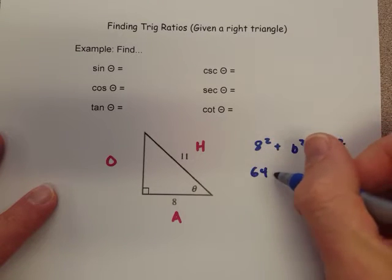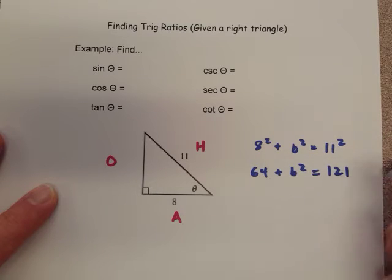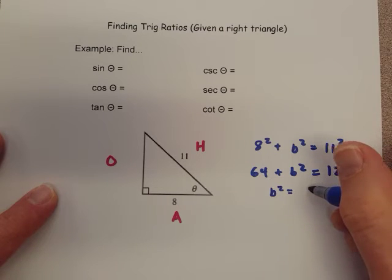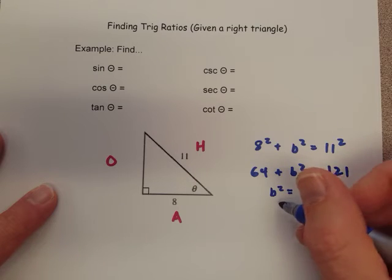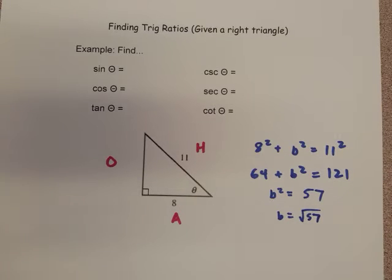So, 8 squared is 64, 11 squared is 121. We'll subtract the 64 to get B squared equals 57. When we square root both sides, this becomes kind of a nasty number. We just wanna simplify this if possible. It really just simplifies to square root of 57.